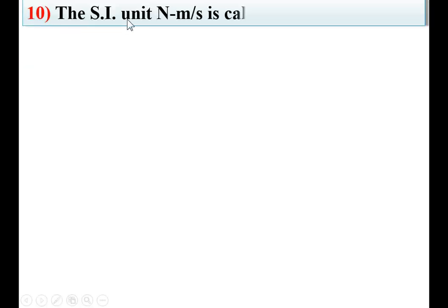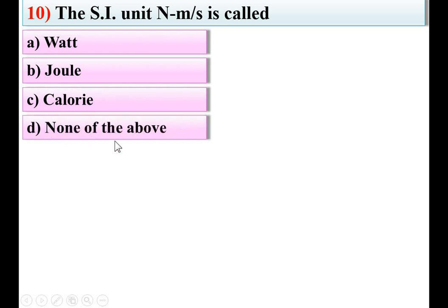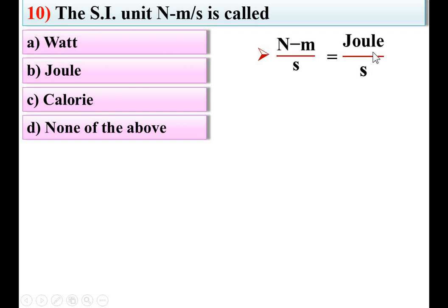Next: the SI unit Newton meter per second is called — options: watt, joule, calorie, none of the above. Newton × meter equals joule, so Newton meter per second equals joule per second. Joule per second is called watt, which is the unit of power — the rate of work done. So A is the right answer.